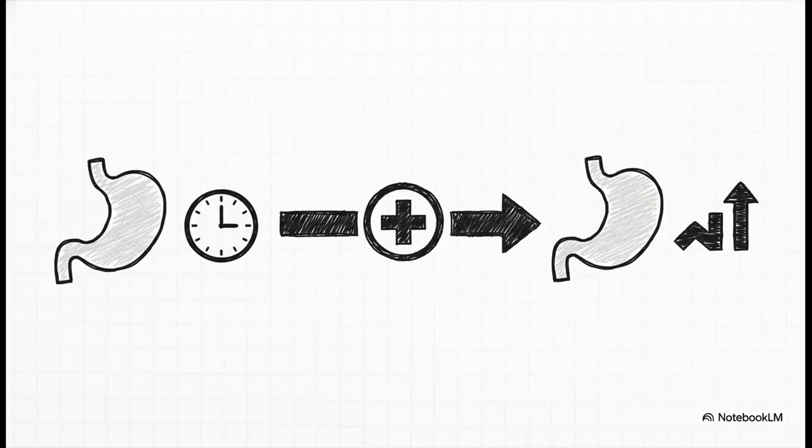That's when you call in our first hero, the Wilcoxon signed rank test. For instance, take this study on gastric emptying. Researchers measured it in 12 patients before and then again after surgery. Instead of looking at the raw scores, what the Wilcoxon test does is it calculates the difference for each patient. It ranks those differences, and then it simply checks if the positive ranks, the improvements, systematically outweigh the negative ones. Simple as that.